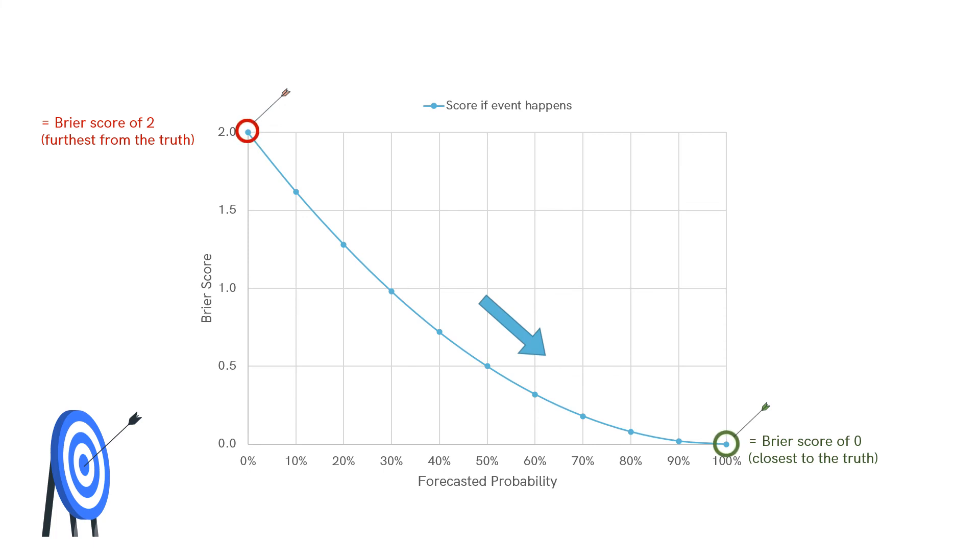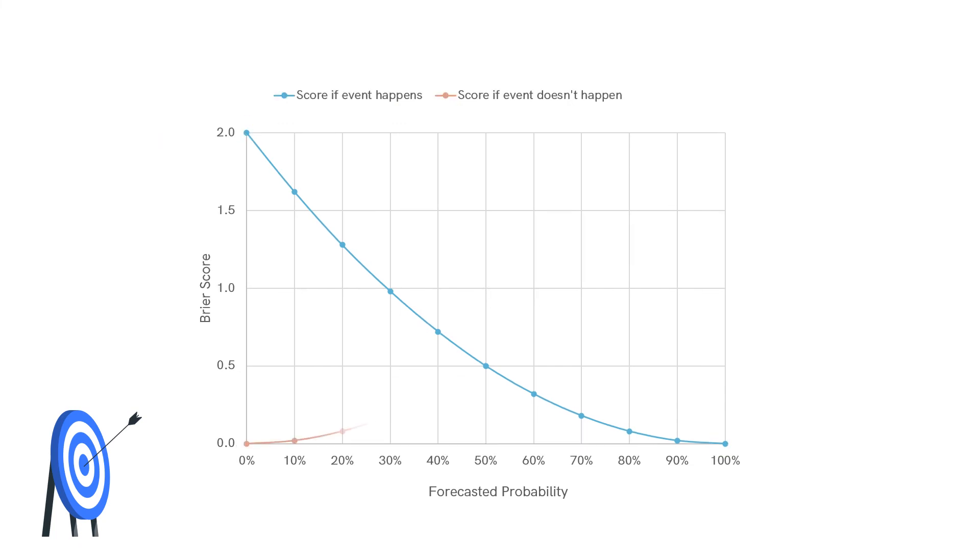So, the more chances you gave the event of occurring, the smaller your error is. The mirror curve plots your score in case the event doesn't happen. The error is then highest if you gave 100% chances to a non-occurring event. Note, however, that the error curve is not symmetric around the 50-50 probability forecast, which means you can lose more on the wrong side of 50-50 than you can win on the right side of 50-50. This is meant to penalize overconfidence while rewarding humility.